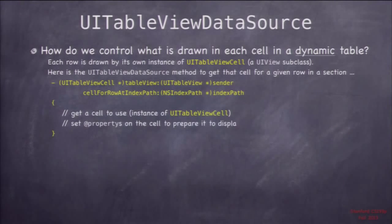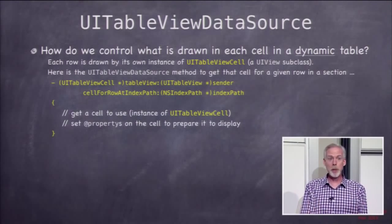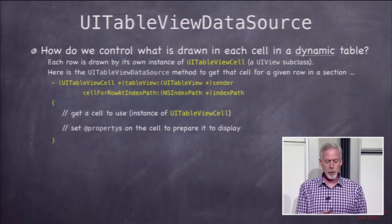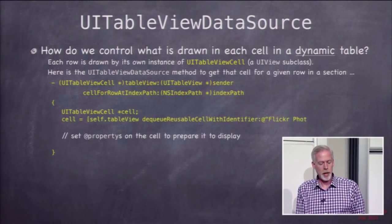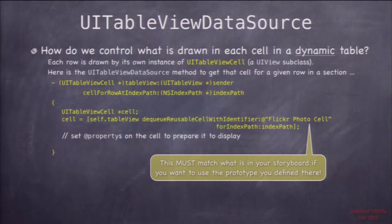What are the two things we need to do here? One is we need to create a cell, and then we need to configure that cell. To create the cell that we're going to return, we use this method called dequeueReusableCellWithIdentifier:forIndexPath. What this does is it essentially goes and looks in the storyboard, finds that identifier — Flickr PhotoCell — remember I told you that was an important thing to type in the storyboard — and it copies that prototype and returns it.